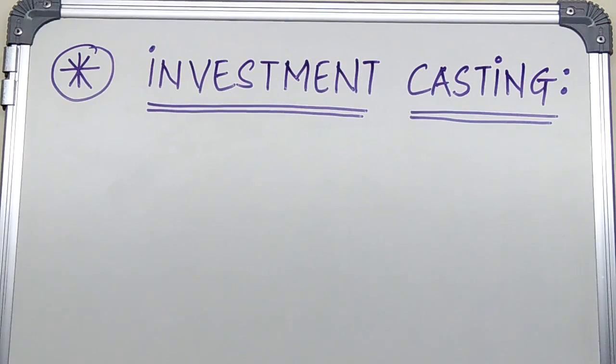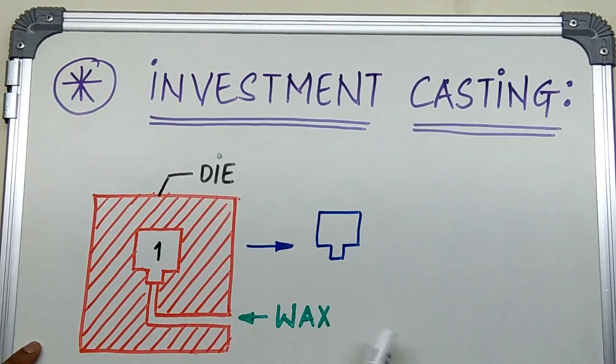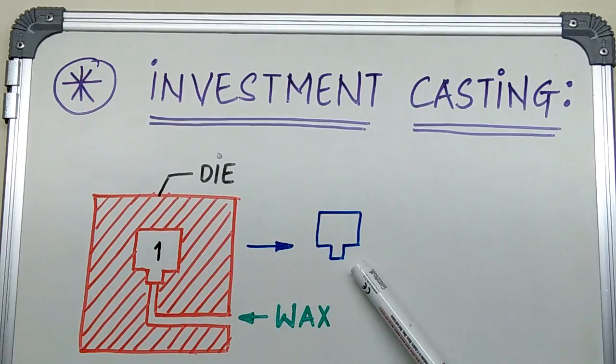Investment casting comes under expandable pattern technique, means we use expandable patterns in this type of casting and the patterns used in this are made up of wax. So initially we produce wax patterns through this die. This is the injector through which we will be injecting wax into this die and we will be getting this kind of pattern.